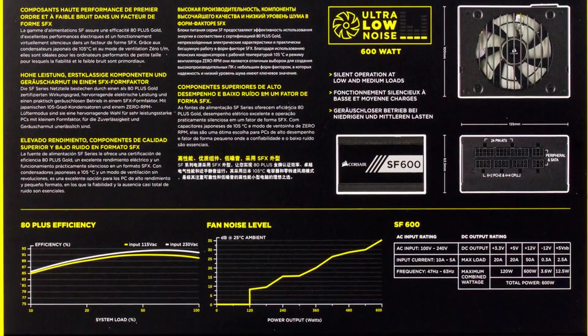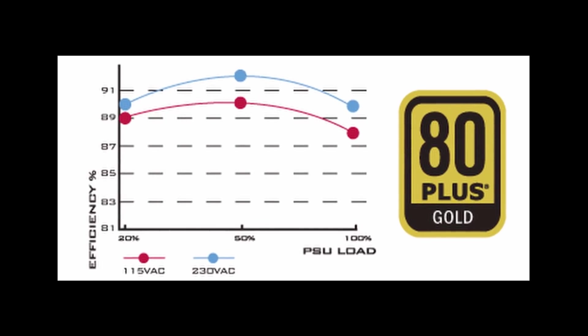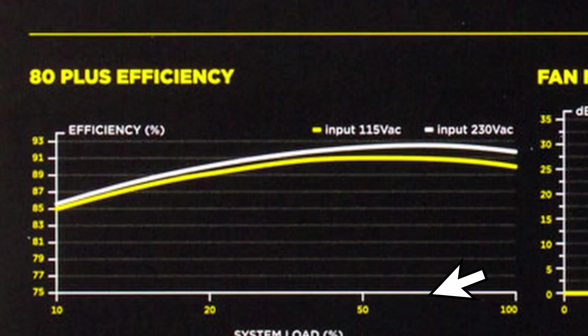If we use an 80 Plus Gold power supply, we are looking at a system budget of around $500 to $550. We need to consider power efficiency when selecting a power supply and balance the power requirements for the system.